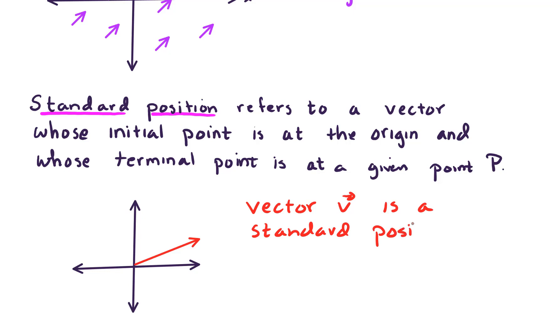The reason it's a standard position vector is that the initial point is right here at the origin. That was important. The terminal point is given at some point P. So we could call this terminal point, this ending point, maybe it's over 1, 2, 3, 4, up 2. So we could say point P is over 4, up 2. One way of describing this vector v would be to say v is given by these coordinates 4, 2, meaning that's the terminal point of the vector.